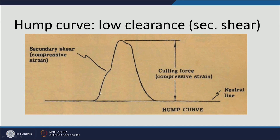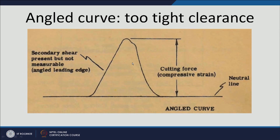The hump curve is obtained when the clearance is low and secondary shear takes place. The variation in force shows a slope with some deviation in the curve, suggesting the occurrence of secondary shear. When the curve is angled, it indicates too tight a clearance; secondary shear is present but not measurable. In this case, the force variation is continuous as a function of time and then starts decreasing.